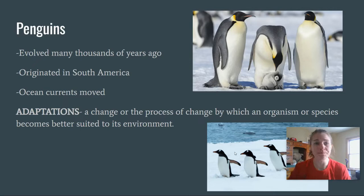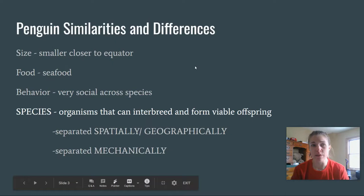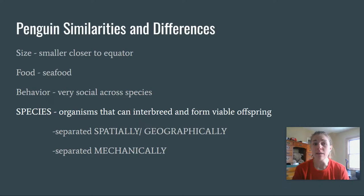When we look at different species, we can examine their similarities and differences to tell how different they really are from each other. As far as penguin size goes, they typically are smaller when they're closer to the equator. All penguins tend to eat seafood.